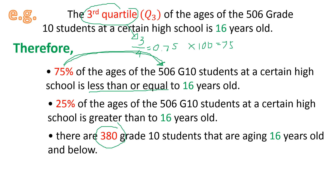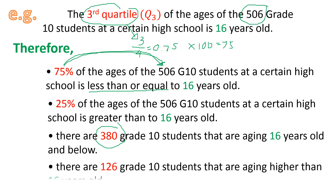The complement of 380, since we're talking about 506 students, so 506 minus 380 gives us 126. Therefore, there are 126 grade 10 students aging higher than 16 years old, because 380 are 16 years old or below. The remaining number of people who are older than 16 years old is 126.